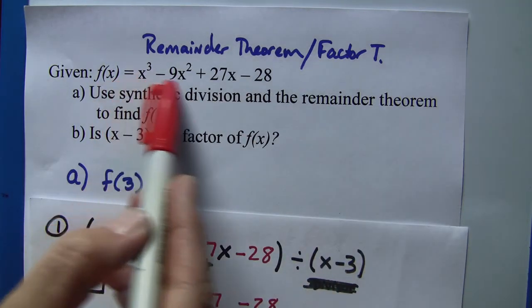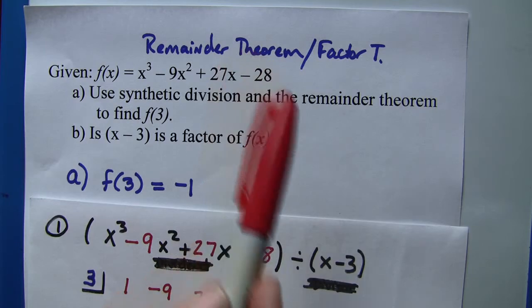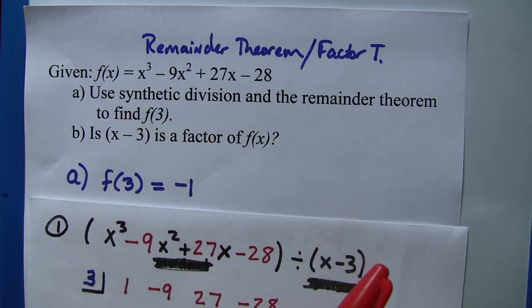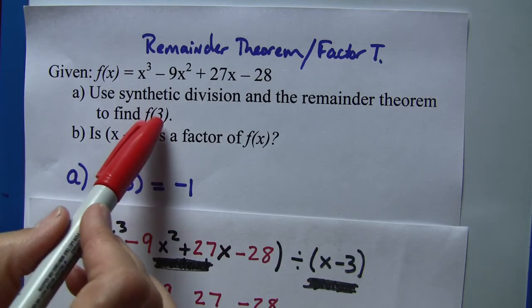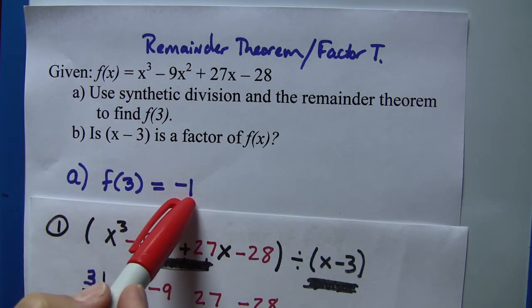You would also find if you plugged in this particular equation in your calculator and you went to your table of values and looked at 3, for 3 you would have y = -1.